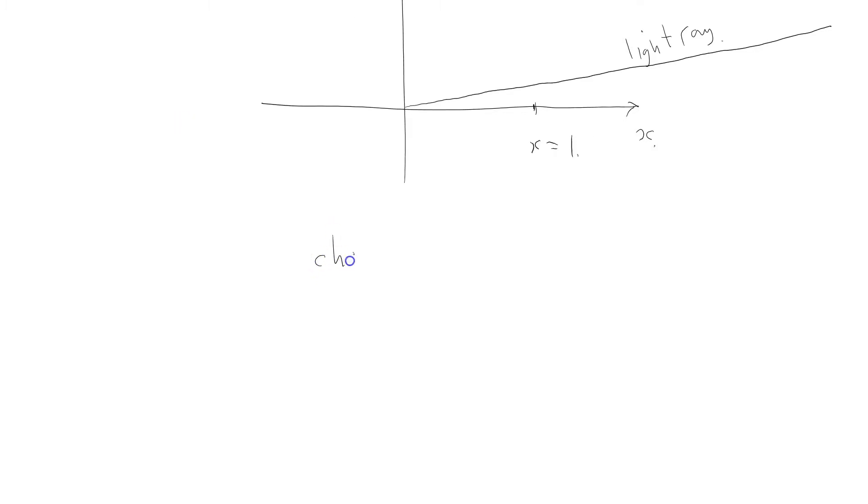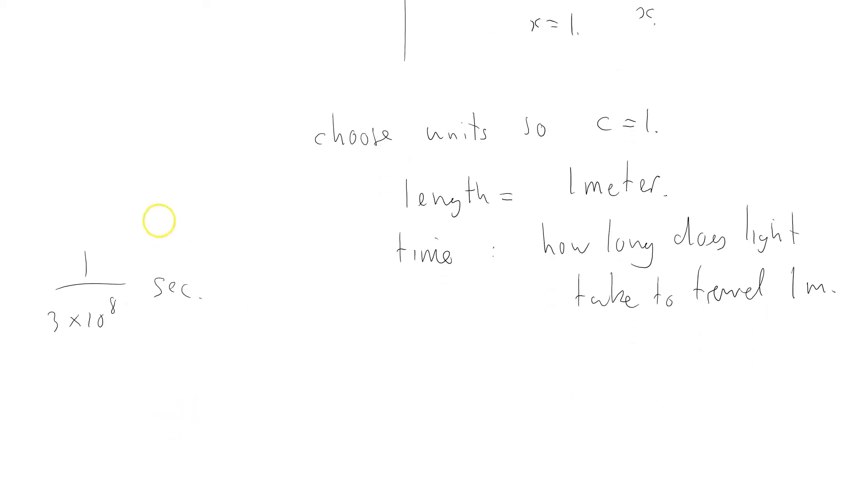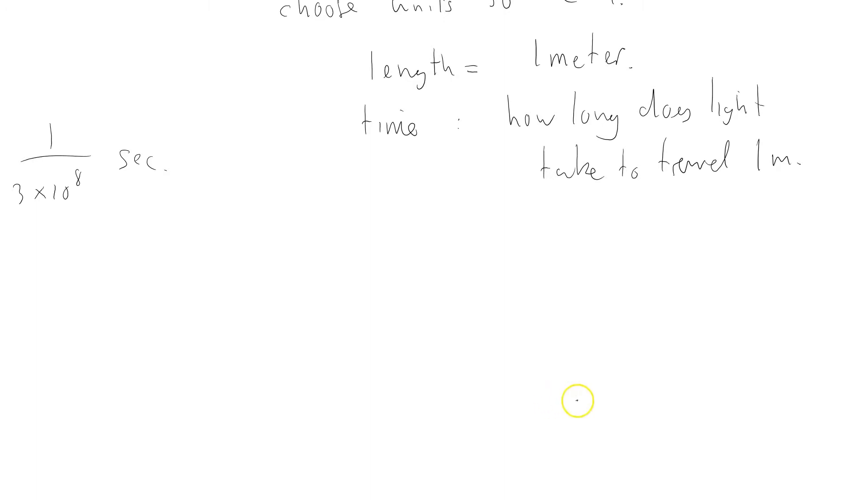So what I'll do is choose units so that the speed of light equals 1. If my length equals 1 meter, which is perfectly sensible to choose, then my time unit is going to be how long it takes light to travel 1 meter. That's just going to be my unit of time. So my unit of time is going to be 1 over 3 times 10 to the 8 seconds, which is a tiny unit of time by terrestrial standards.